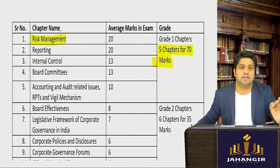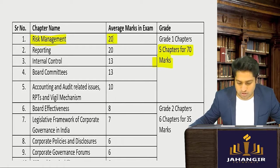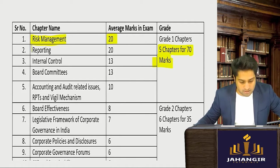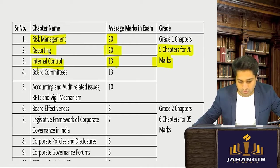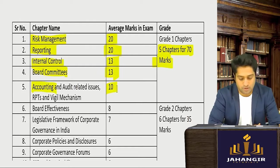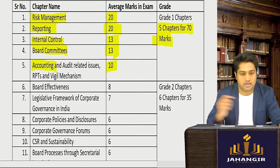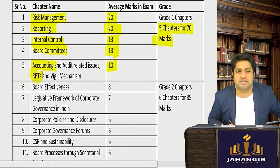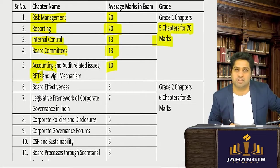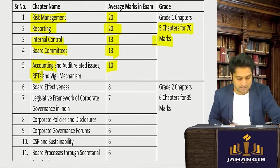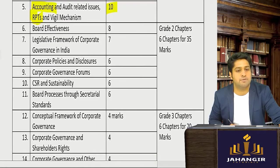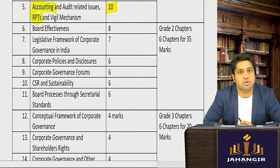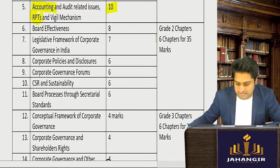Risk management is a definite given in your exam, coming for around 20 marks. Reporting comes for around 20 marks, internal control comes for around 13 marks, board committees and accounts and audit-related aspects come for around 10 marks. Related party transactions is also a confirmed sure-shot in every single exam, so learn the section and rule numbers.